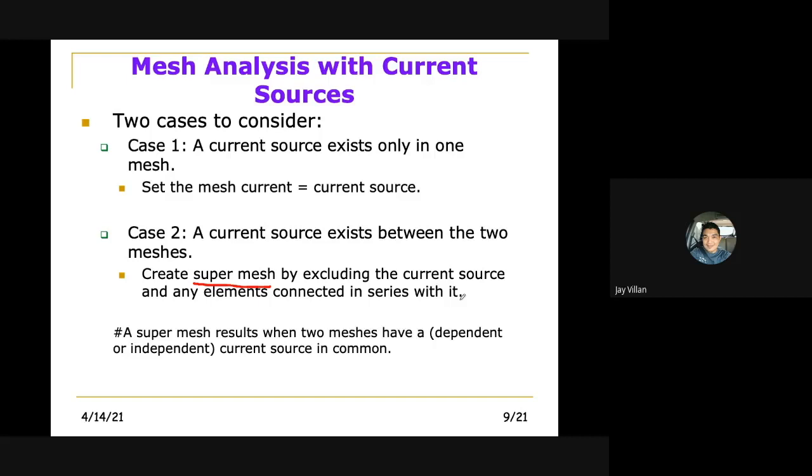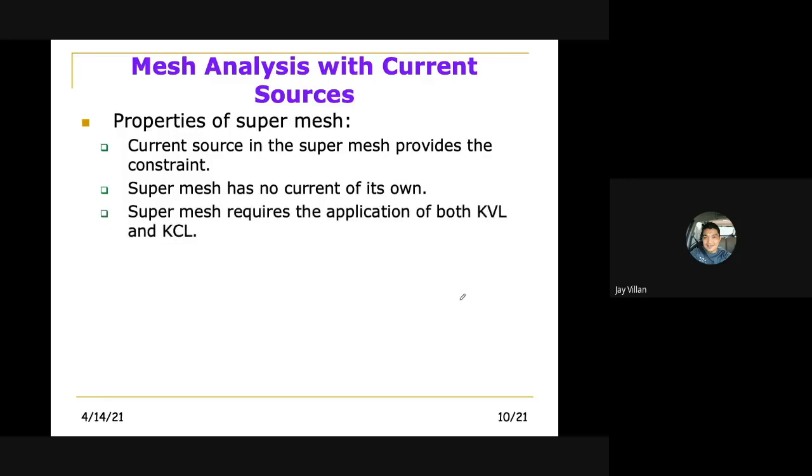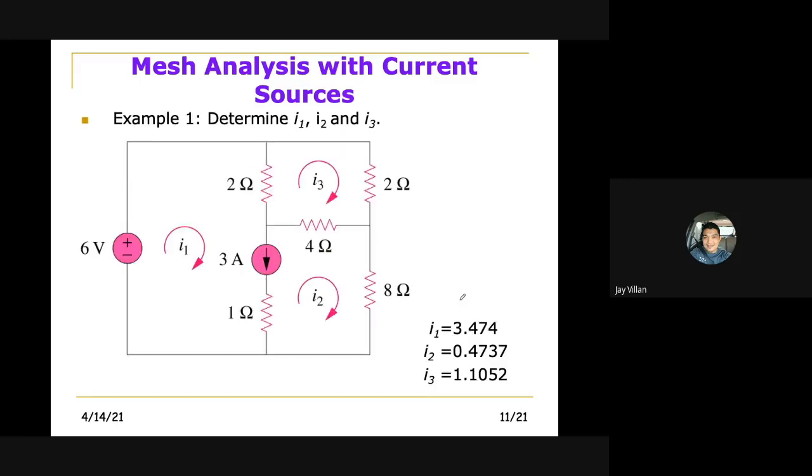A super mesh results when two meshes have a current source, whether dependent or independent, in common. Properties of a super mesh: it provides the constraint, it has no current of its own, which is like the nodal analysis where a super node has no voltage of its own. A super mesh requires the application of both KVL and KCL. In mesh analysis with only voltage sources we use KVL, but here with current sources involving super mesh, we also have to apply Kirchhoff's current law.